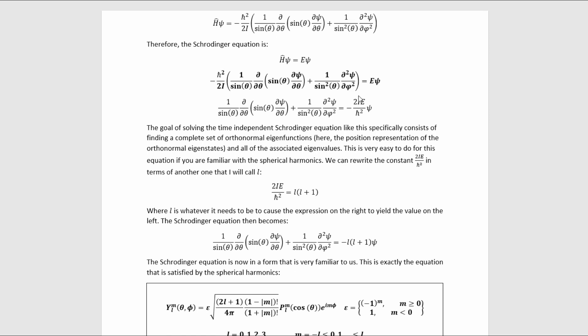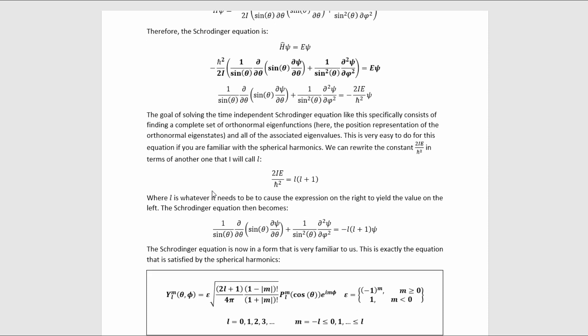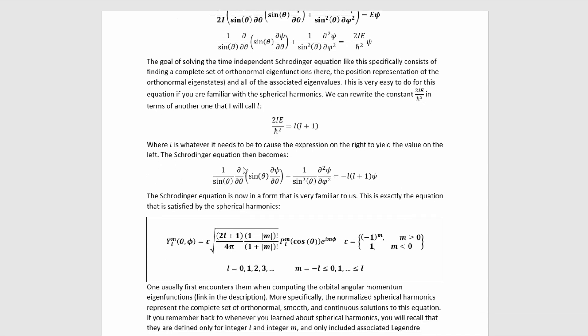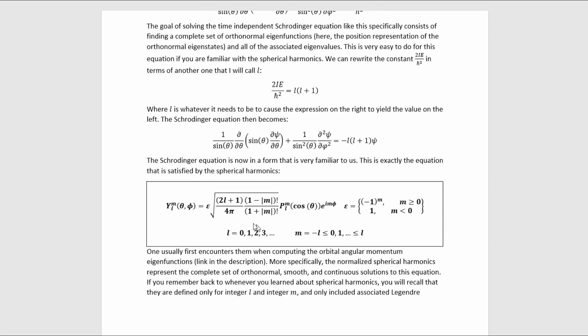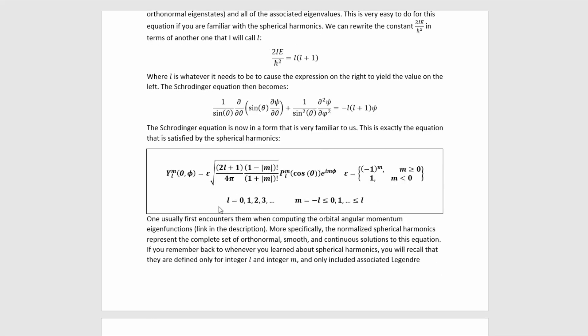We can rewrite this constant that shows up here in the equation in terms of another constant called L, like this, where L is whatever it needs to be to cause the expression on the right to equal the value on the left. The Schrödinger equation then becomes this. The Schrödinger equation is now in a form that is very familiar to us. This is exactly the equation that is satisfied by the spherical harmonics. I've written out the spherical harmonics right here.